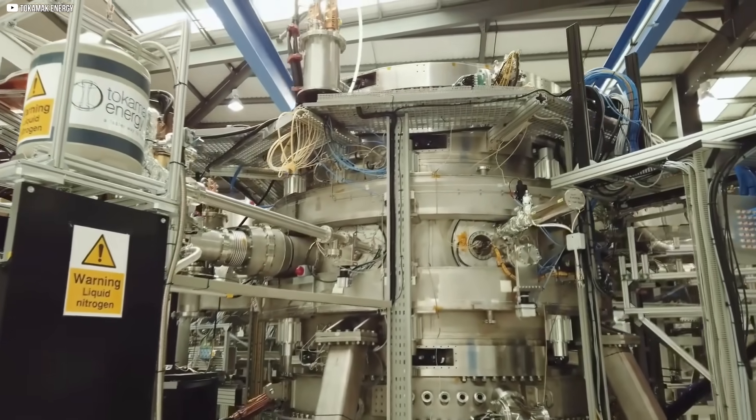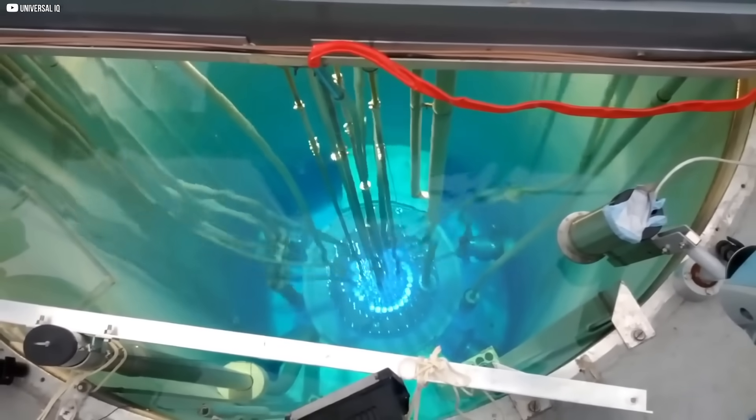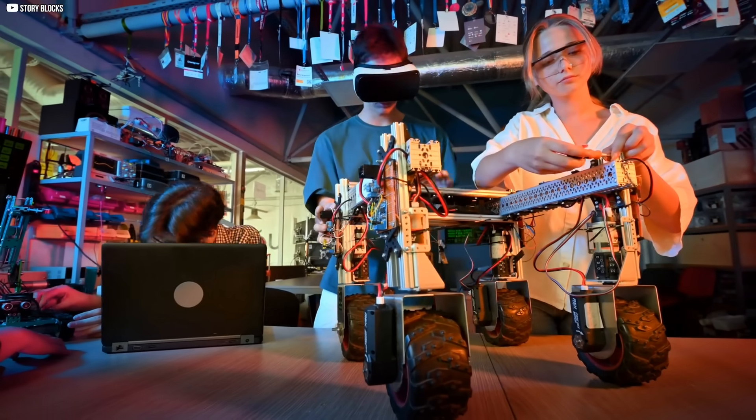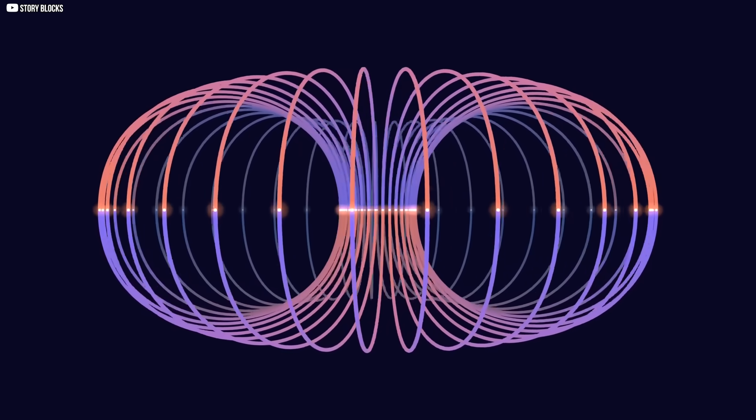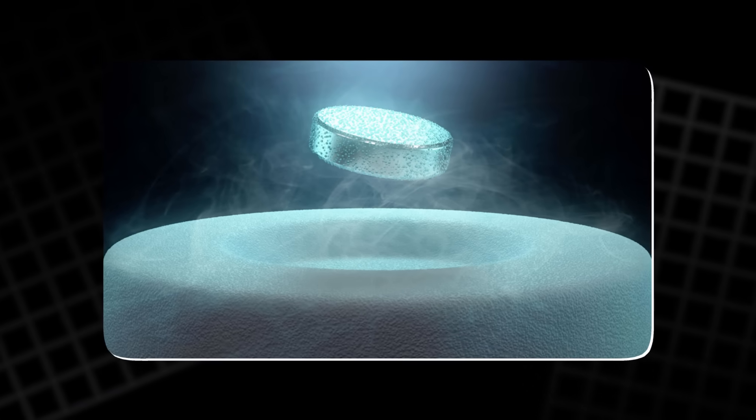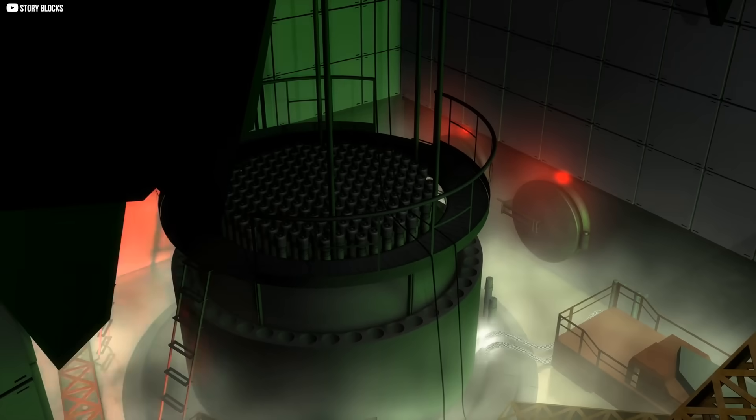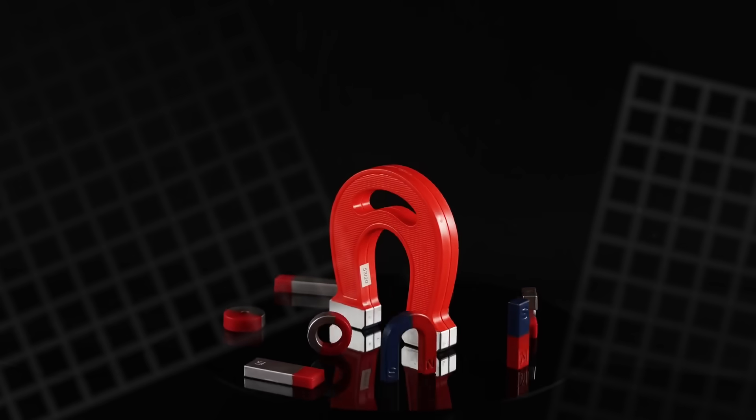Challenges in fusion: even with the most advanced magnets, making nuclear fusion work is not easy. The main challenge is to produce more energy than the reactor consumes. So far, this has only been achieved in small experiments. Containing plasma, which is hotter than the sun, is extremely difficult. It twists, moves, and sometimes escapes even from the strongest magnetic fields. Cooling superconducting magnets is also a major hurdle. Traditional superconductors need temperatures near absolute zero, which makes the system complex and costly.